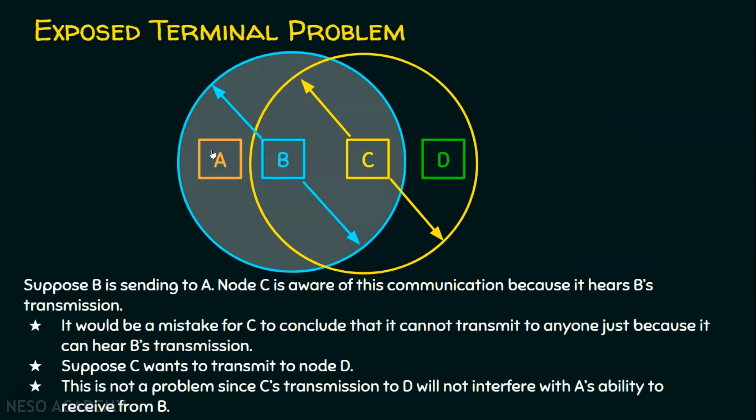because A is not in the coverage area of C. But C can mistakenly conclude that because of the conversation it hears from B, which is actually intended to A, it cannot send to anybody. This is the exposed terminal problem.